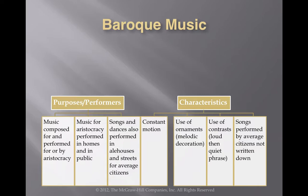In this slide we explain the various purposes and characteristics of Baroque music — music composed for and performed for the aristocracy. They are the ones commissioning these pieces of works and having concerts in their own homes, palaces, and mansions. We also have songs performed in the bars, the taverns, and on the streets. A characteristic of this music is a lot of flowing from note to note — constant motion — which we will hear in various vocal and instrumental examples.